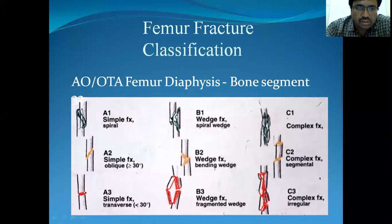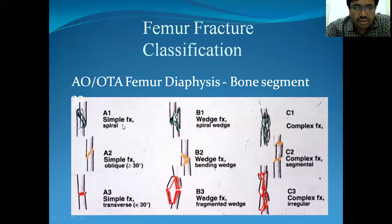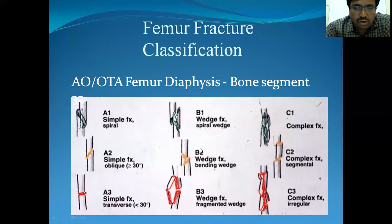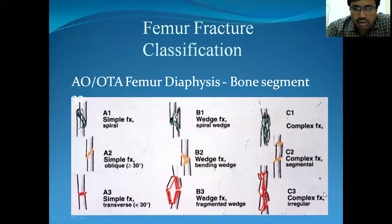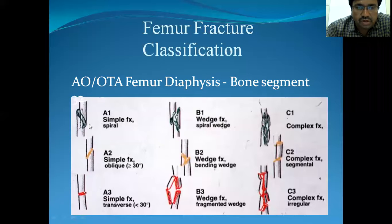The AO classification of femoral diaphyseal fractures classifies fractures as A1, A2, A3 for simple fractures, and as complexity increases they fall into B and C groups — B1, B2, B3 and C1, C2, C3. C3 represents the most complex variety of comminuted fractures, while A1 is a simple fracture.